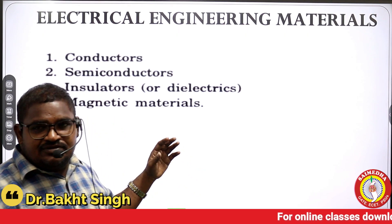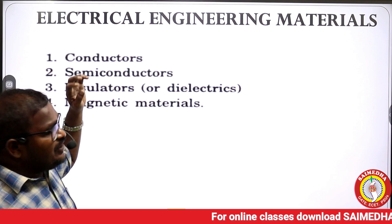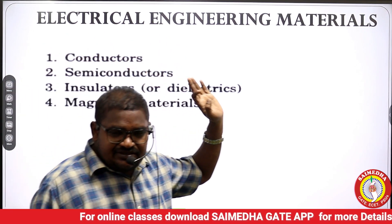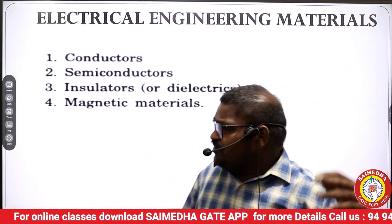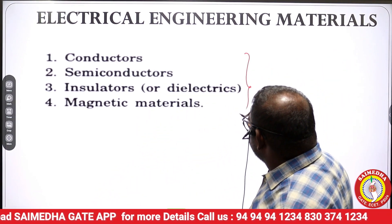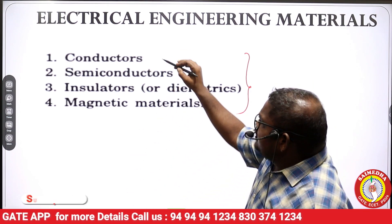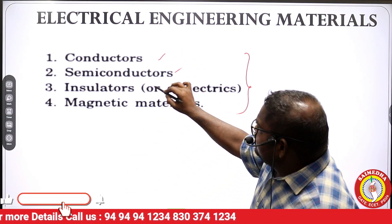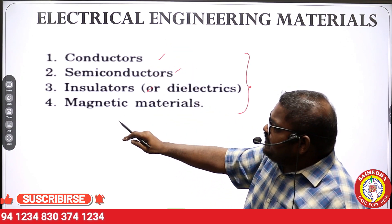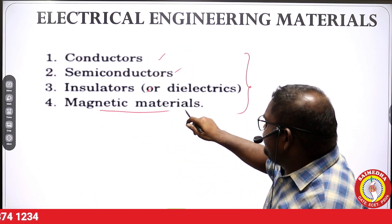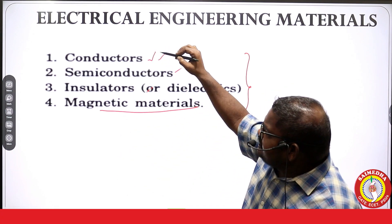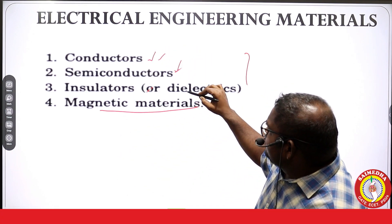Welcome to Sai Medha. Now let us see electrical engineering materials. Electrical engineering materials are generally four categories: conductor, semiconductor, insulator or dielectrics, and magnetic material.